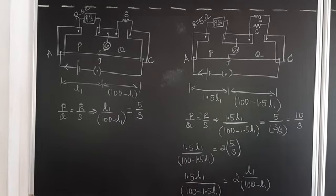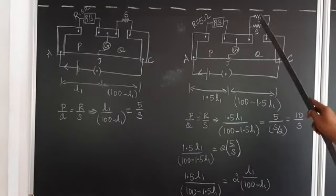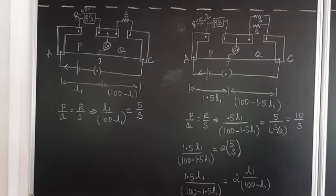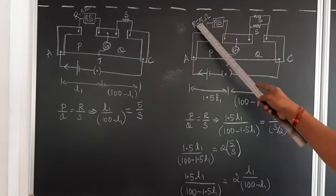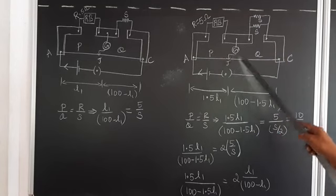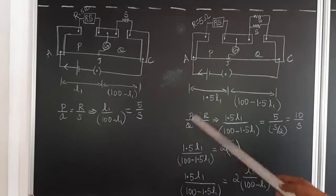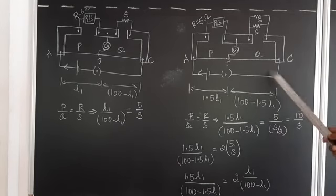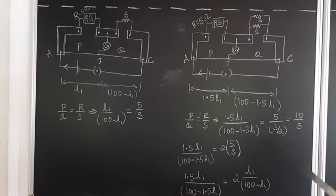In the second case, S is shunted with an equal resistance, meaning one more resistance is connected in parallel with S. The new balance length is 1.5L1. So P = 1.5L1 and Q = 100 − 1.5L1. The shunt resistance gives a parallel combination of S and S, which reduces to S/2. So: 1.5L1 / (100 − 1.5L1) = 5 / (S/2) = 10/S.